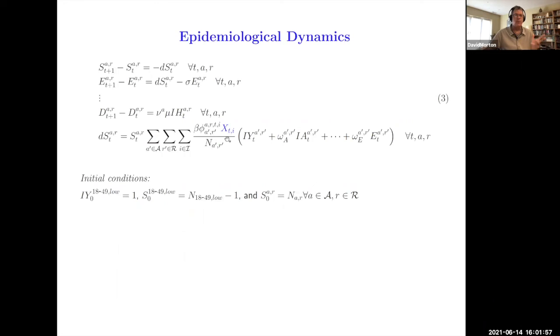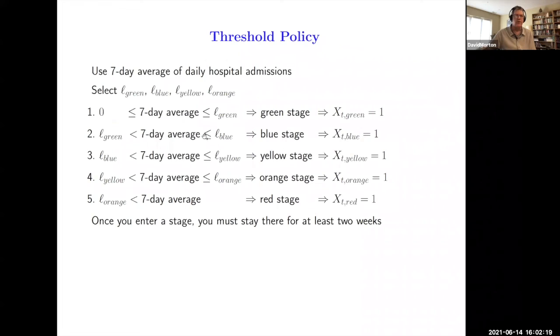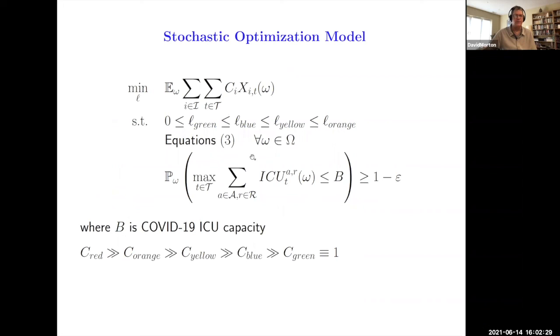There's a bilinear term there that is the driver here between the number that are susceptible and the number that have been exposed or are infectious and asymptomatic or are infectious and symptomatic. The model is actually initiated with one single individual who's 18 to 49 with low risk, and it grows from there. There was a variable here that's blue. This X_TI is a binary variable that says, what stage are we in? Beta is the coefficient that's a driver of transmission, and then this phi is a contact matrix. If we're in the red stage, then we have lower transmission than if we're in the blue stage. And this X is a binary variable, plucking that out, and then we're going to optimize these thresholds of what does it take to be in green, blue, yellow, or orange. And that's going to turn on these indicators.